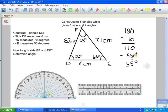And now we've constructed a triangle while given one side and two angles.